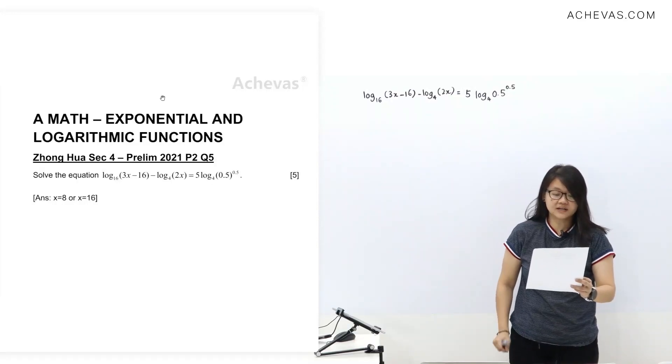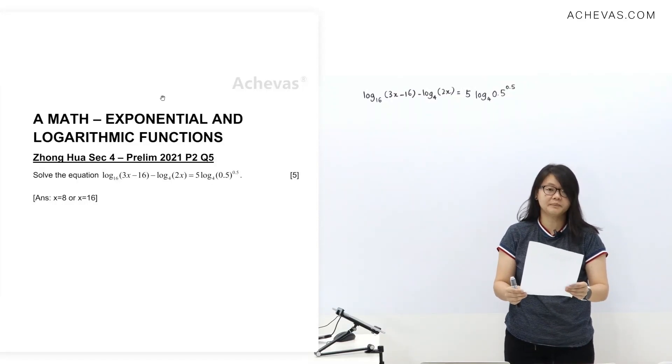Okay, today we are going to take a look at Zonghua, set 4, Prelim 2021, Paper 2, Question 5.